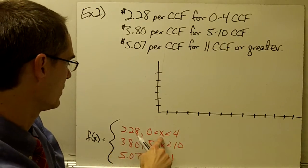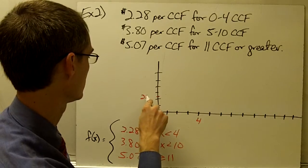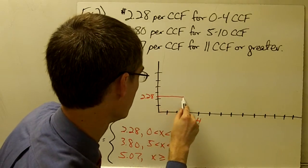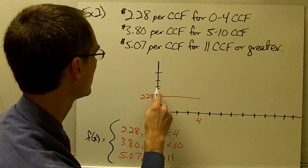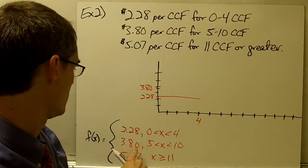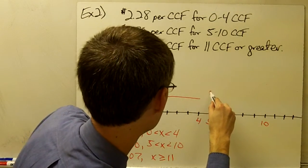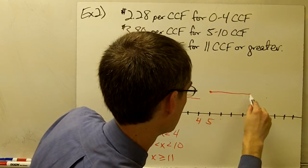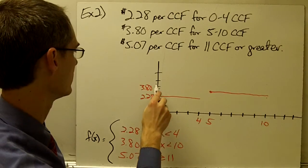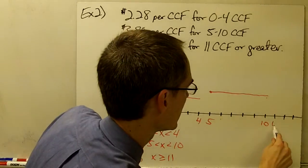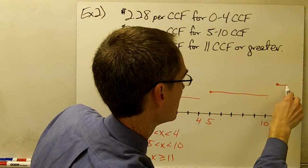f of x is a constant $2.28 when x is between 0 and 4, so for between 0 and 4, that's going to be about right here — just this constant value. Between 5 and 10 it's a different constant value, $3.80, so that's going to be about right here between 5 and 10. And then greater than or equal to 11, it equals $5.07, which is about right here. So there's my preliminary graph of this piecewise function.